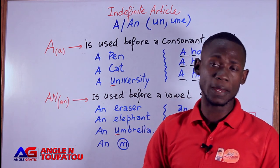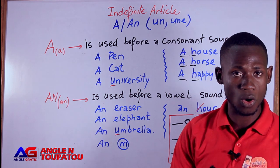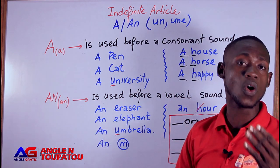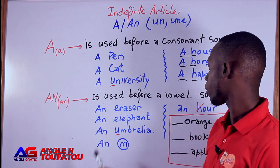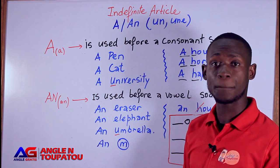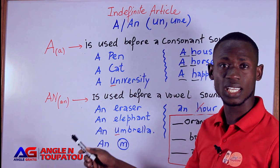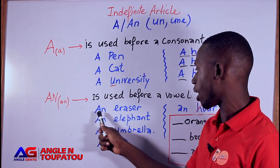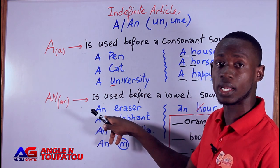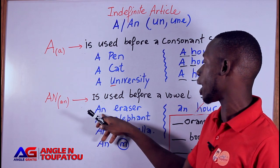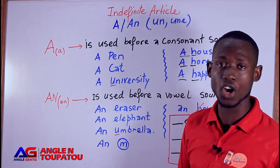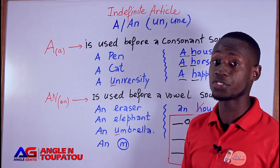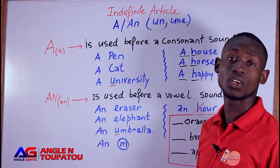We use 'AN' before a vowel sound. We use 'AN' before a vowel sound — on utilise 'AN' devant un son voyelle. For example: 'an eraser' — I don't say 'a eraser', because that creates a combination of two vowel sounds, which doesn't sound right. So we put 'AN'. I say 'an eraser'. I say 'an elephant' — because 'E' is a vowel sound.